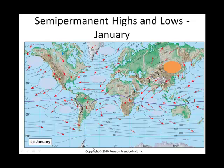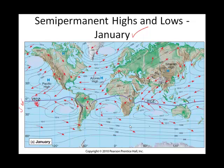Here are our semi-permanent highs and lows in January. This line is the intertropical convergence zone. In January, you would expect the southern hemisphere to take possession of the intertropical convergence zone. The semi-permanent highs associated with the descending part of the Hadley cell: we have the Pacific high, the Azores high, and the Siberian high. This is where the Hadley cell is descending.